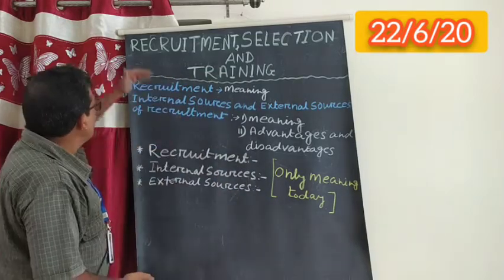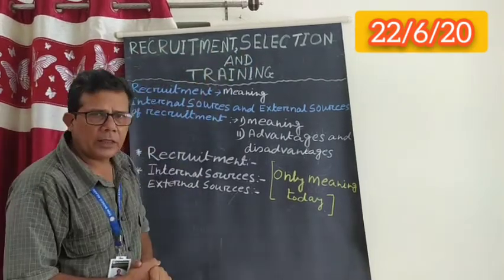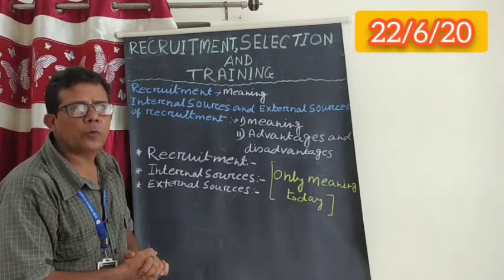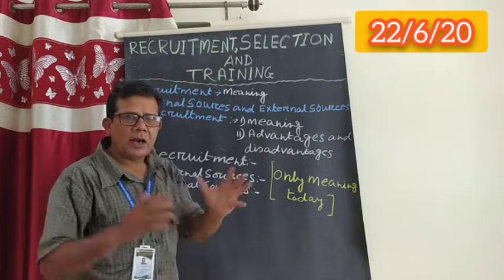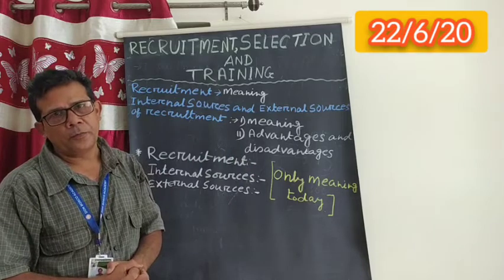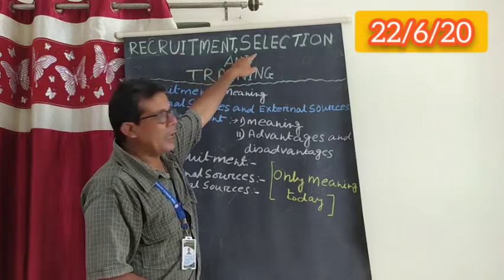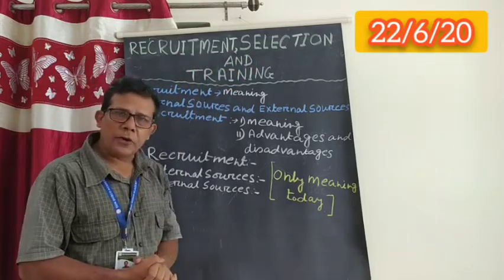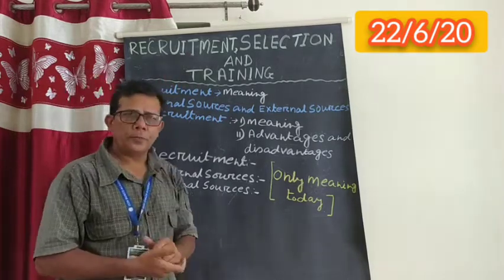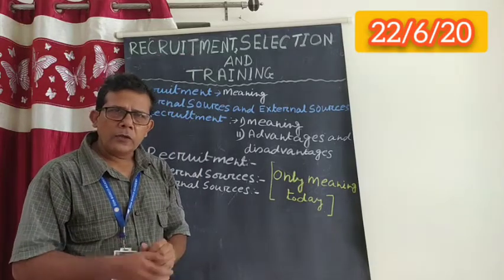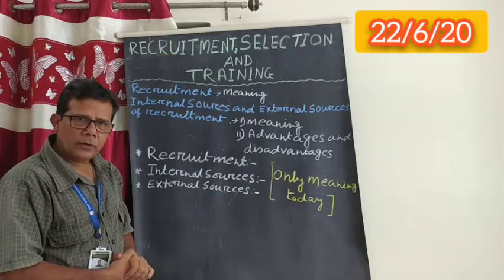The first thing is recruitment, the second thing is selection, and the third thing is training in this chapter. These three things — recruitment, selection, and training — are interlinked with each other. The first step is recruitment, the second step is selection, and the third step is training. Today I am not going to discuss all three things. Today I am just going to start the first step, that is recruitment.